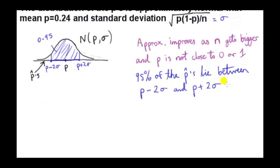I've written that statement in words. Of course we can write it down mathematically. The probability that P hat lies between this value and this value here is 0.95.